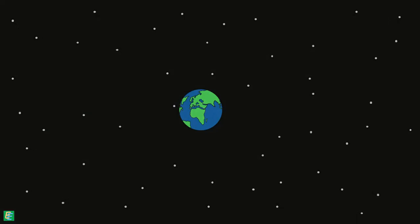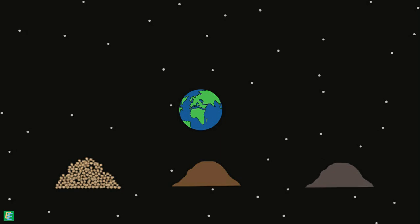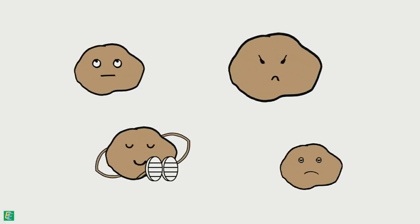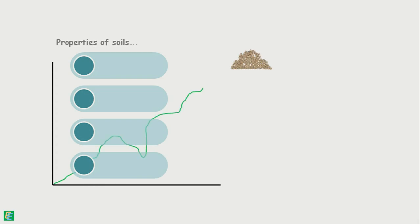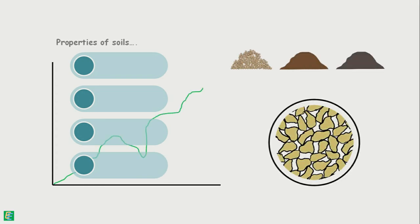On earth there are a variety of soils and they all exhibit different kinds of behavior. Properties of soils vary not only with the soil types but also with the soil grain arrangement and moisture content.